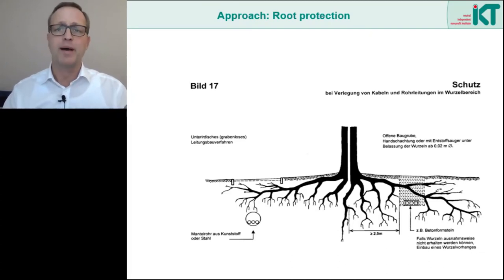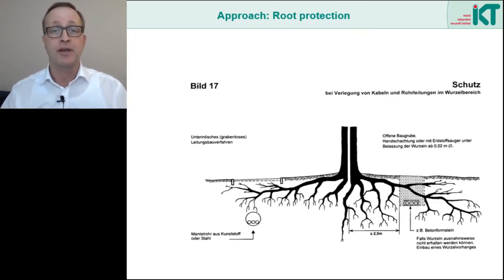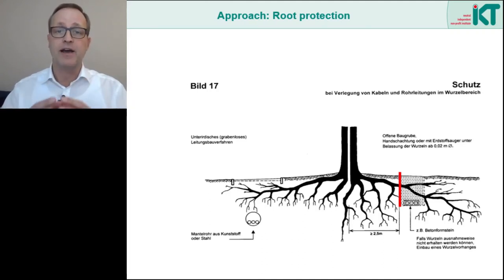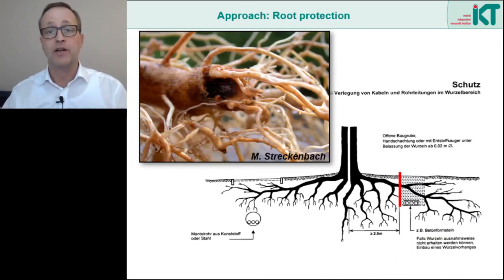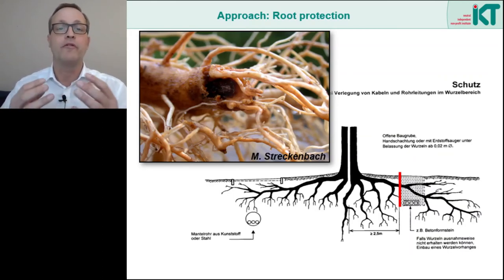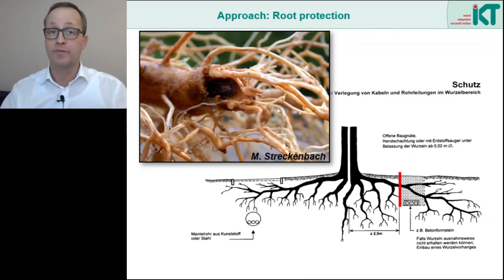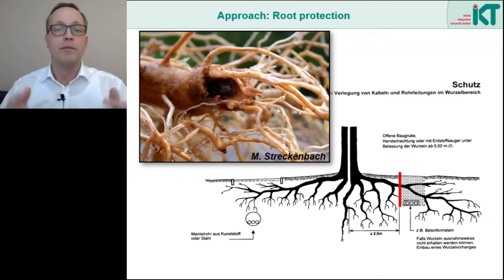Nevertheless, sewer and pipeline engineering should also have a high interest in ensuring that roots are not damaged. Because if we cut the roots during our construction work, we put the tree under stress. If the tree loses large parts of its root system, it will react with increased growth — in particular with strong growth at the cutting points. This means that with root cutting, we provoke the formation of new roots in the trench. And if the trench still consists of loose backfill materials, these many new roots will not leave the trench — it is then only a matter of time before the first root damage occurs to the pipes.